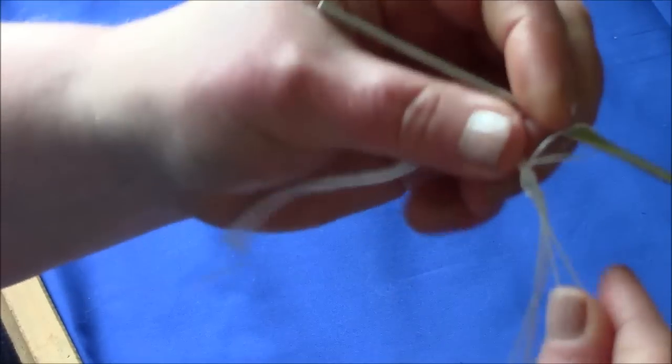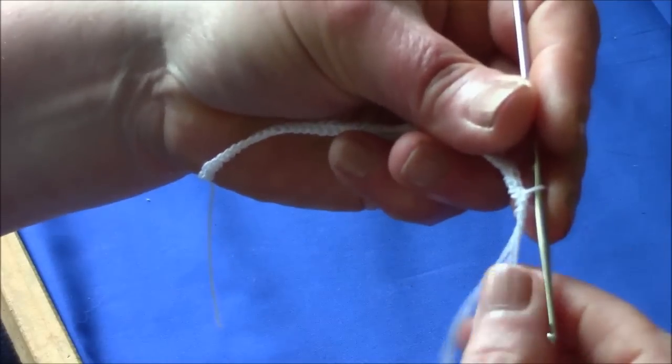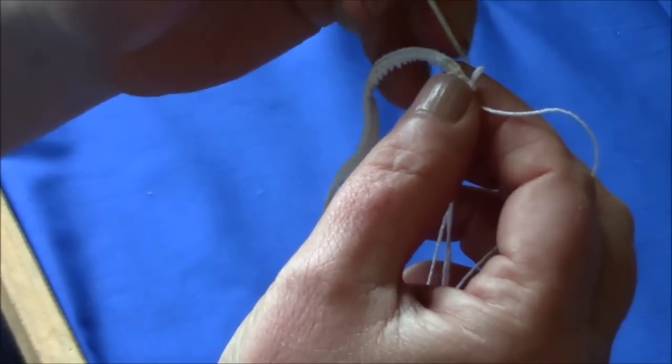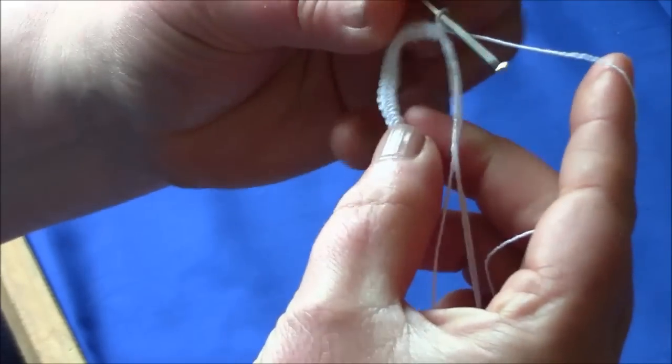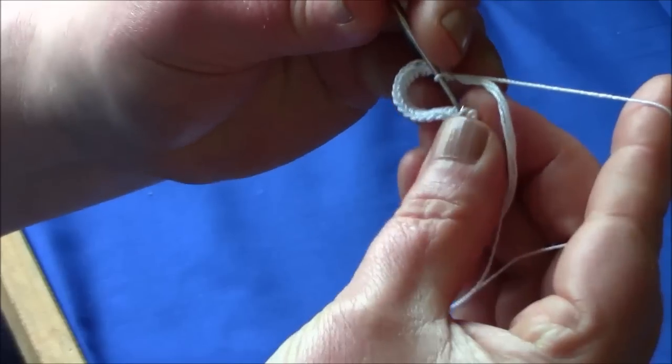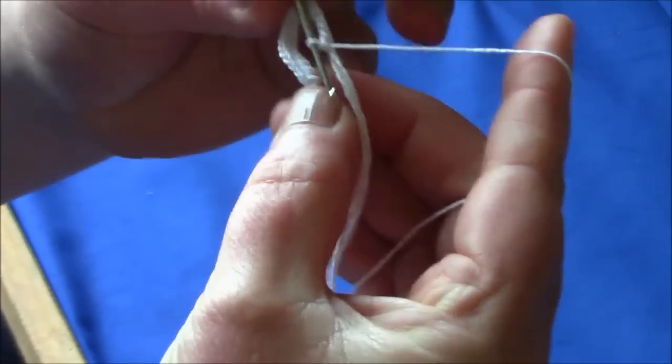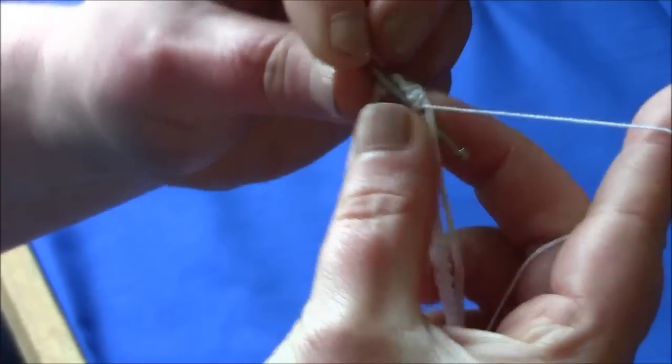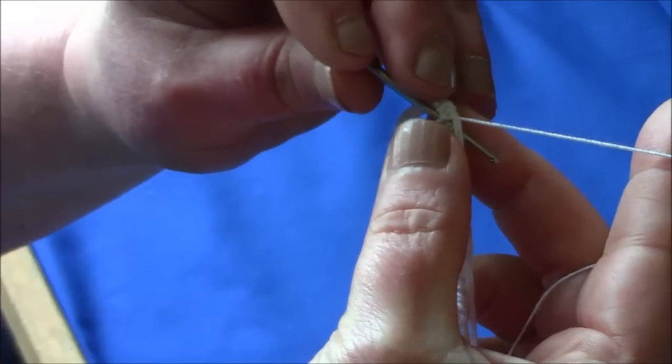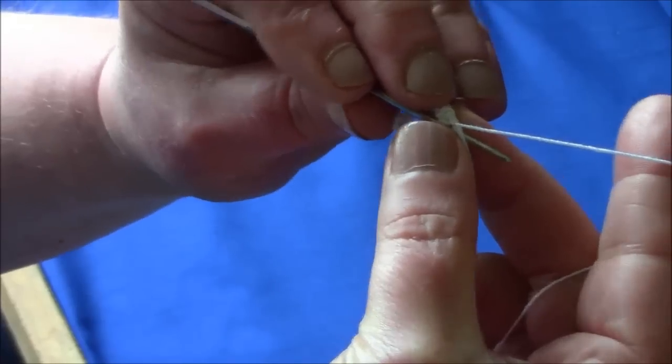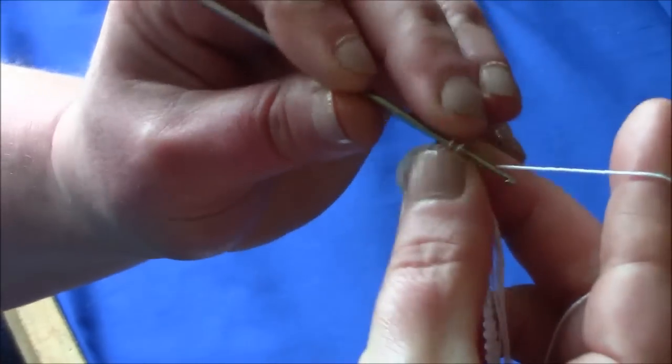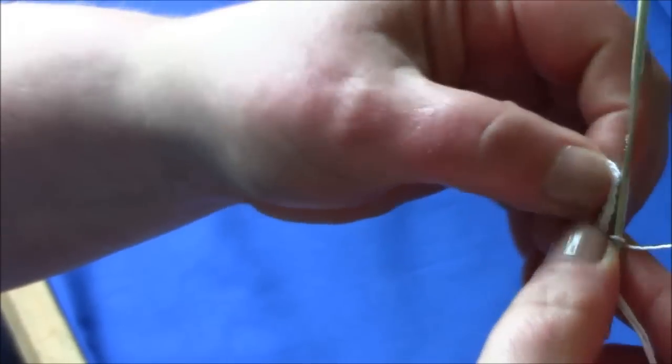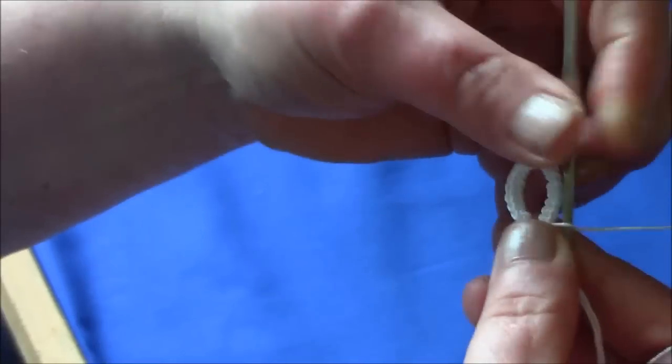And now you hook into the back of the 20th single crochet from the hook. So count back to the 20th stitch from the hook. Slip your hook into the back of it along the cord, and place the cord over your hook and make a slip stitch. So you form the little ring at the end of the cord.